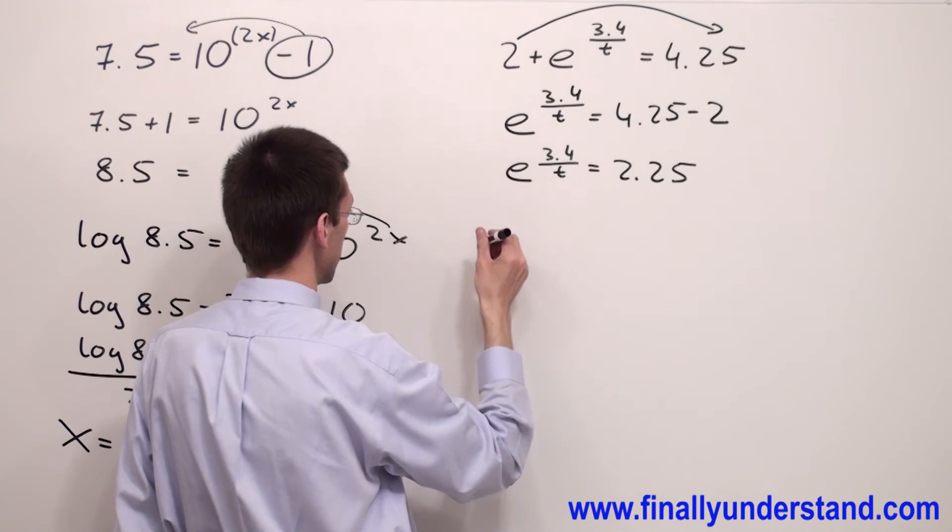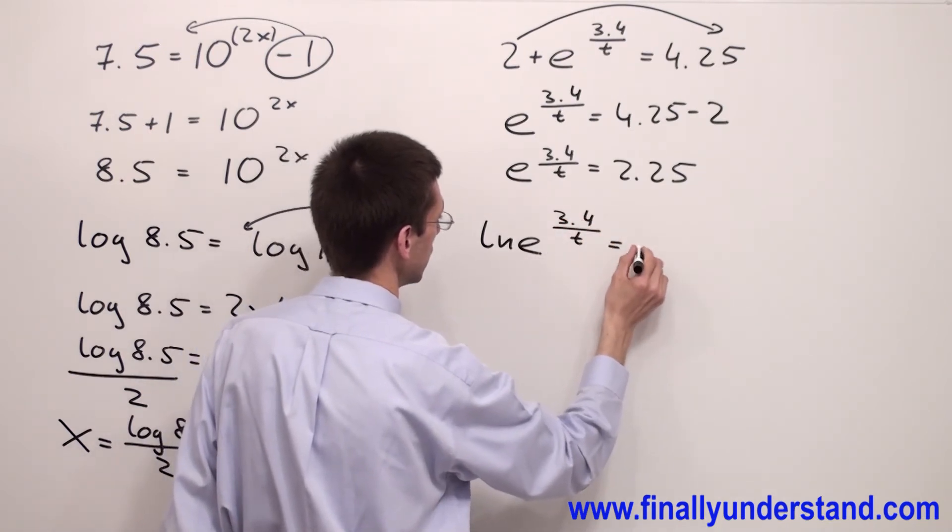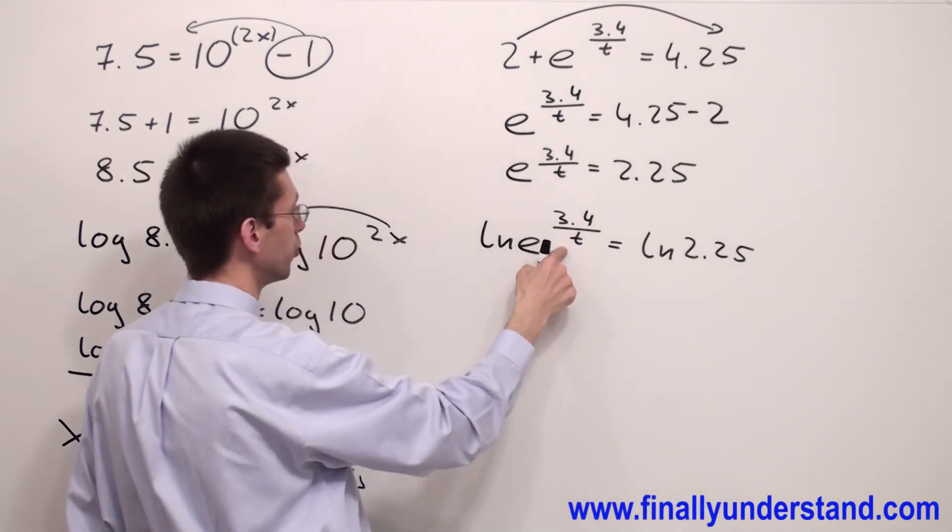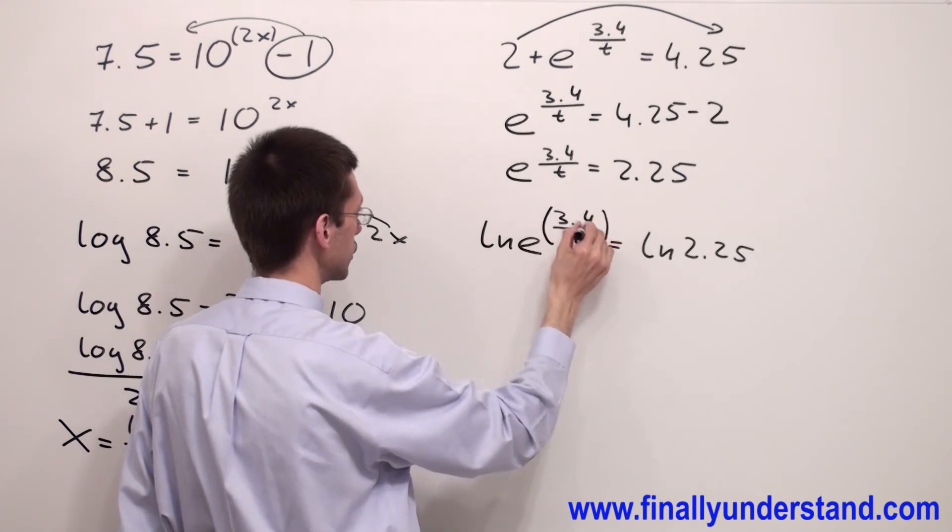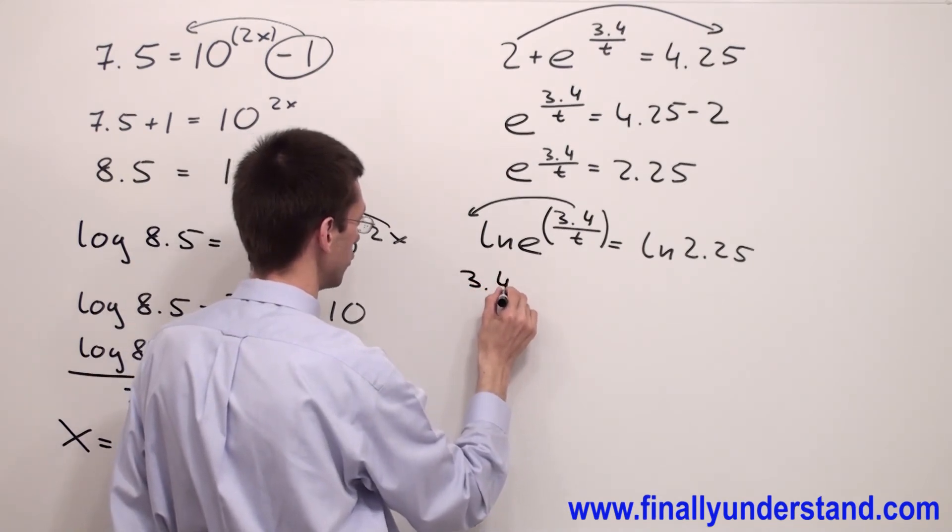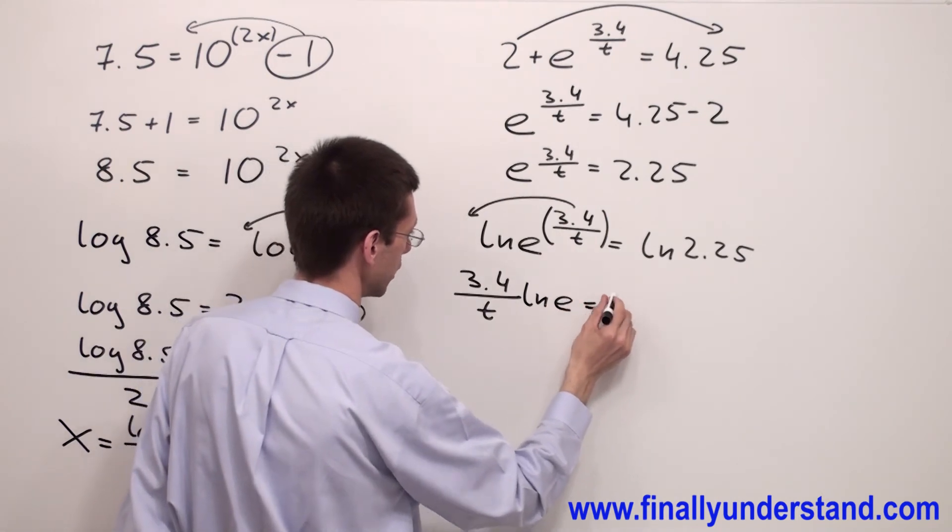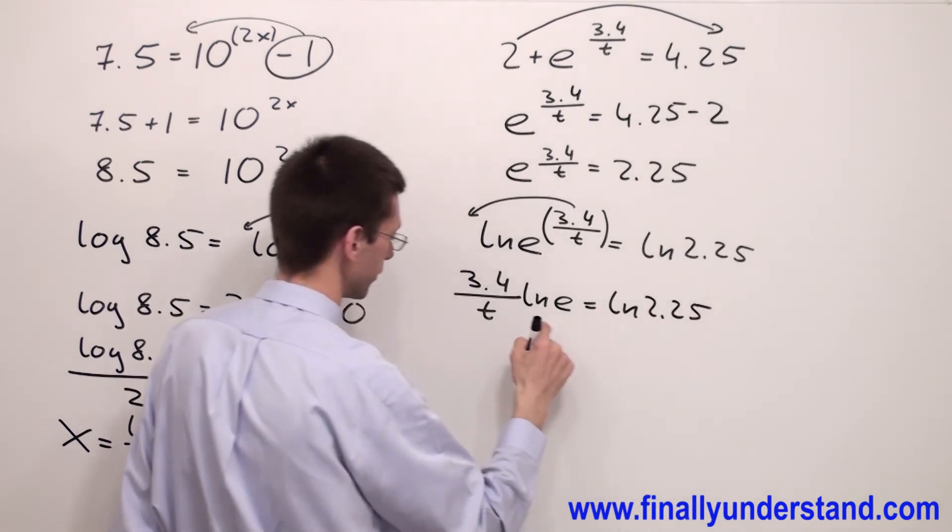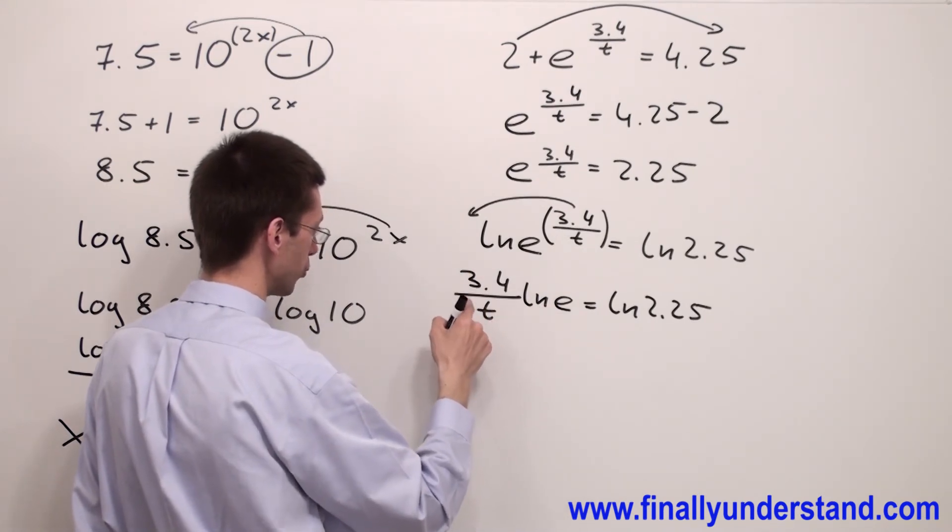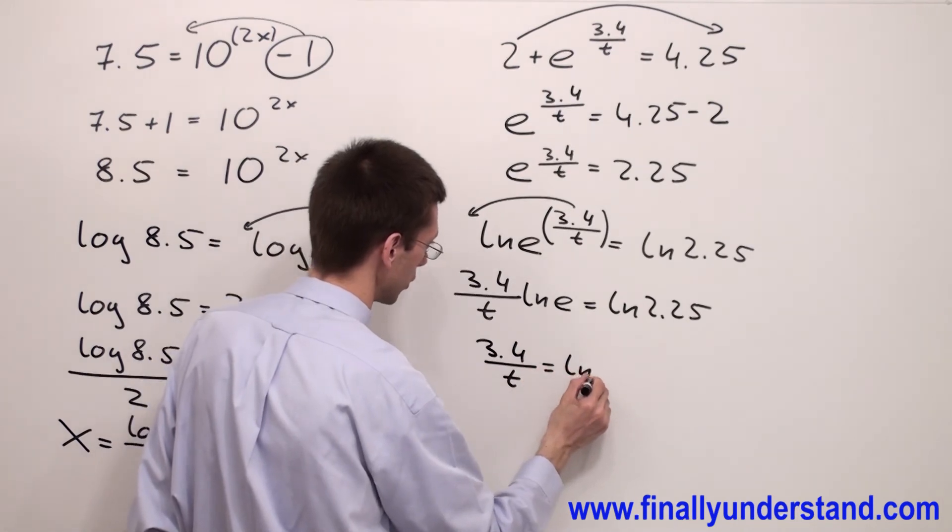Because we have e, we're supposed to use the natural logarithm. So if ln e 3.4 over t is equal ln 2.25. Next, I'm supposed to use the property for the log of power. And take this exponent and convert this to the coefficient for this logarithm. And we are going to have 3.4 over t ln e is equal ln 2.25. Natural log of e is equal 1. 1 times 3.4 over t is equal 3.4 over t. So I write 3.4 over t is equal ln 2.25.